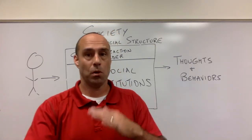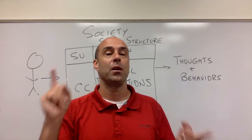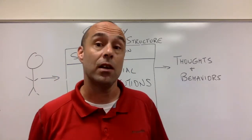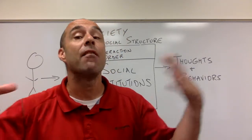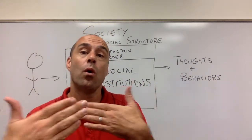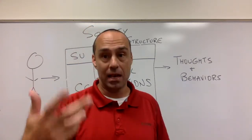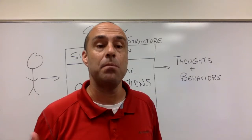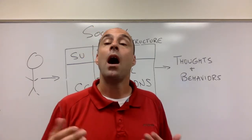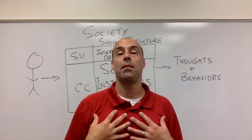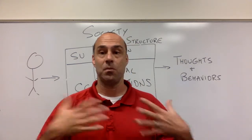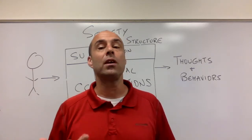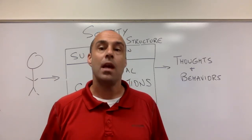Quick recap: social structure is a system of statuses and norms that exists for the entire society — think of every possible status and the norms of behavior that connect them. Statuses are positions in society. Norms are expected behaviors, and they're attached to statuses. I have a status set attached to me — all the statuses that I have — but my experience and your experience of the social structure is through situations.